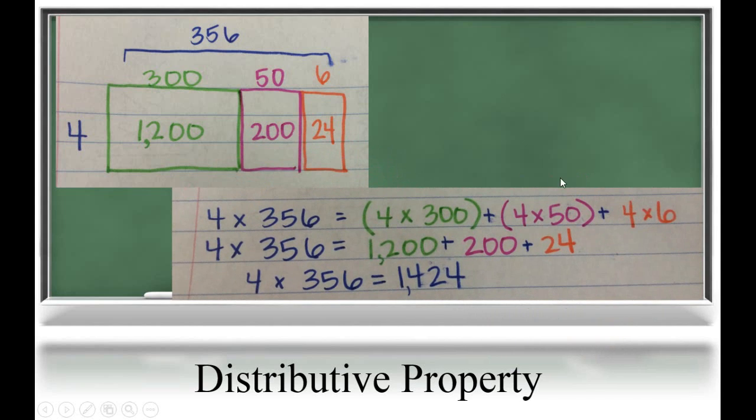Using the distributive property, students are required to record their thinking using parentheses. You can see we have 4 times 300, 4 times 50, and 4 times 6. We add those up to get our total product of 1,424.